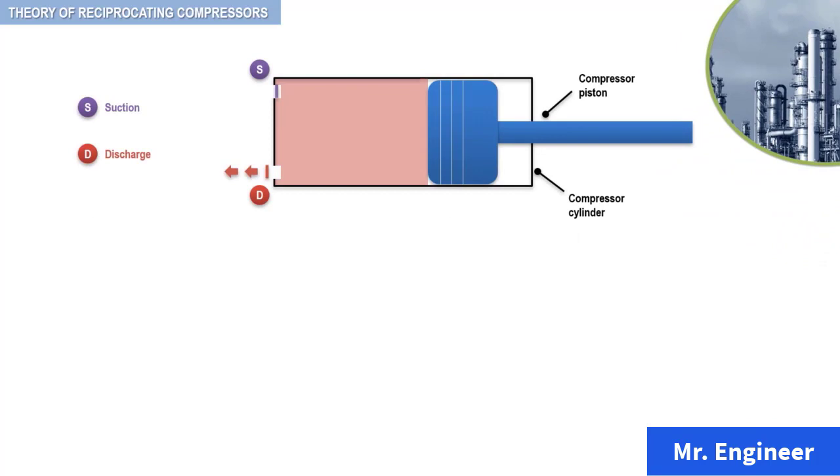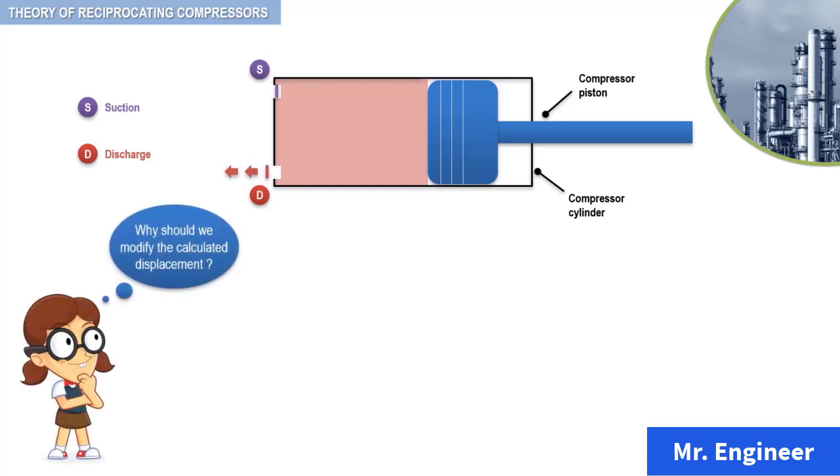To determine the actual inlet capacity of a cylinder, the calculated displacement must be modified. There are two reasons why modification is needed. The first is because of the clearance at the end of the piston travel.